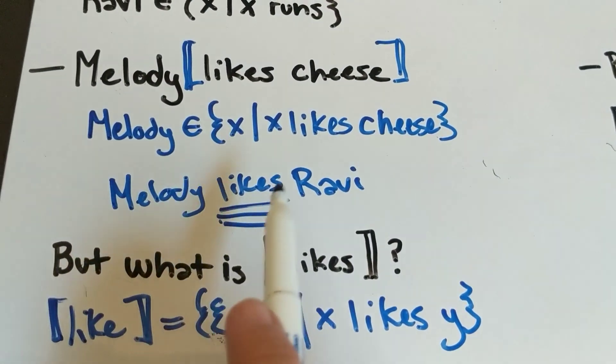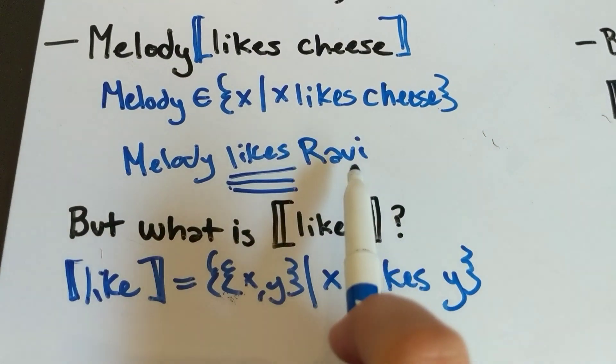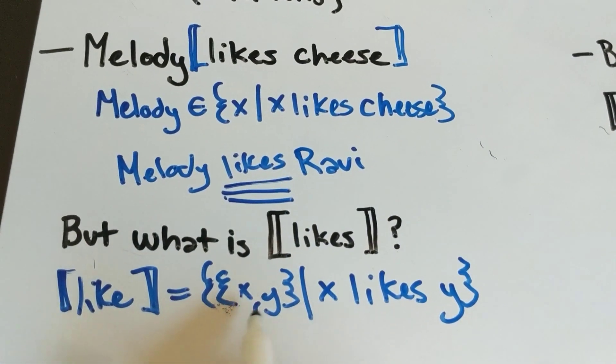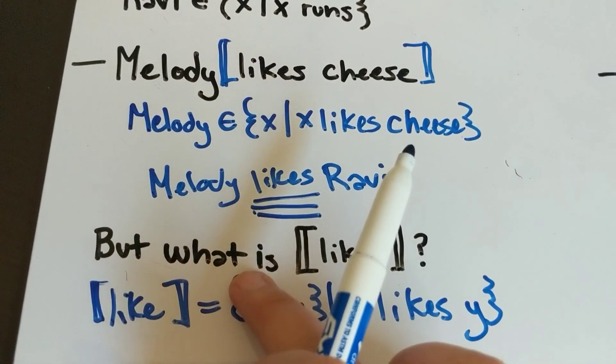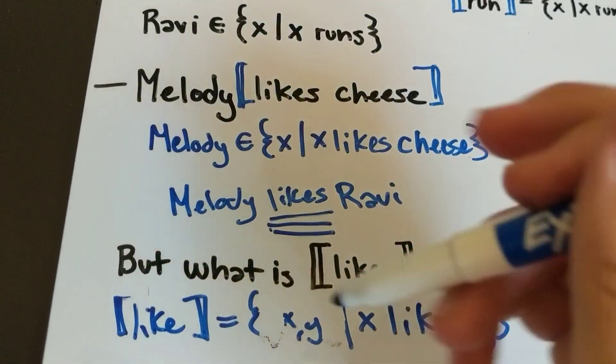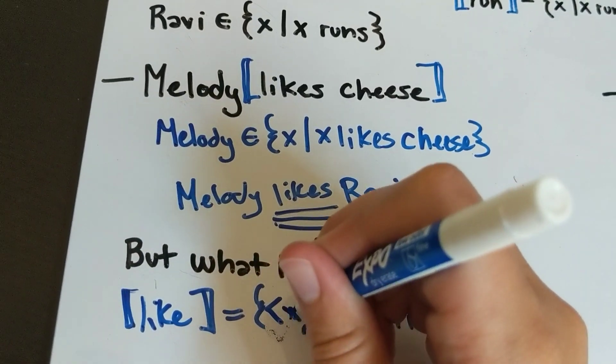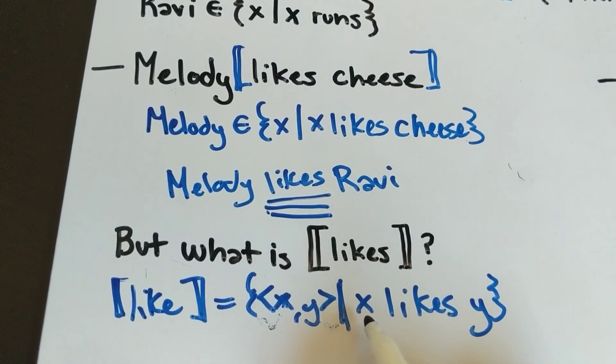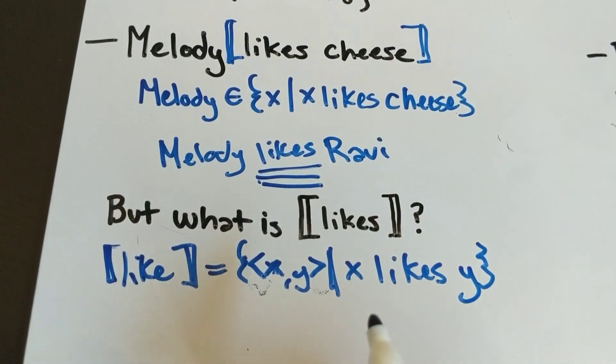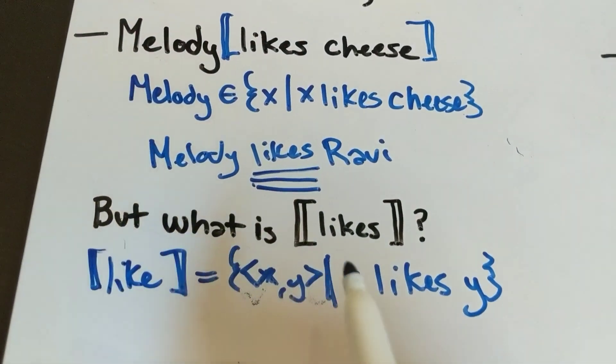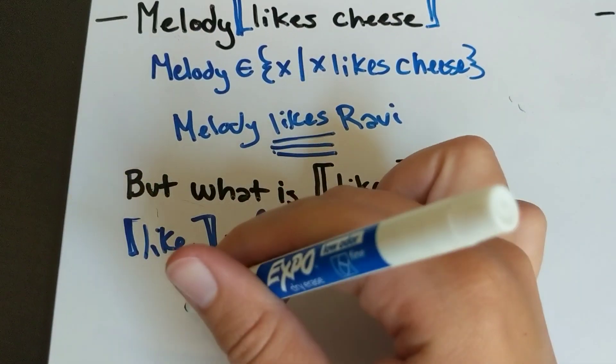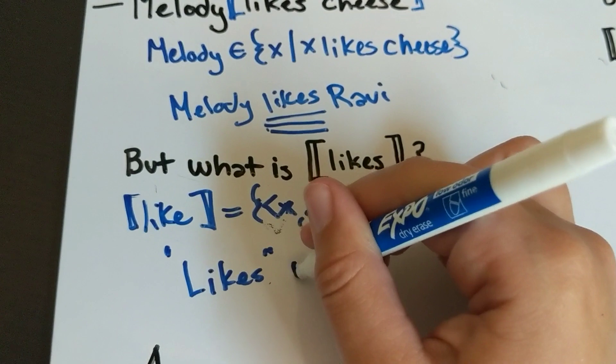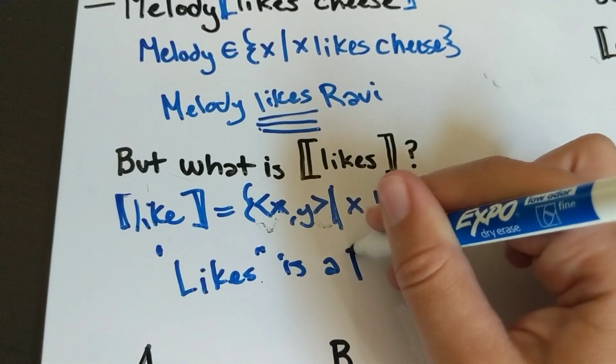...is that the fact that Melody likes Ravi does not necessarily entail that Ravi likes Melody. So we can't just say that it's a set; we actually have to say it's a set of ordered pairs such that x likes y. Here we have a set of ordered pairs, which means that 'likes' is a relation.